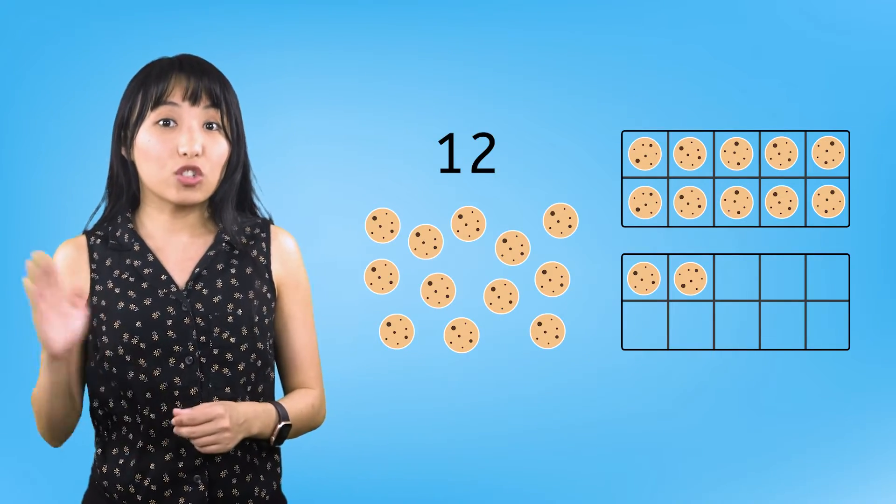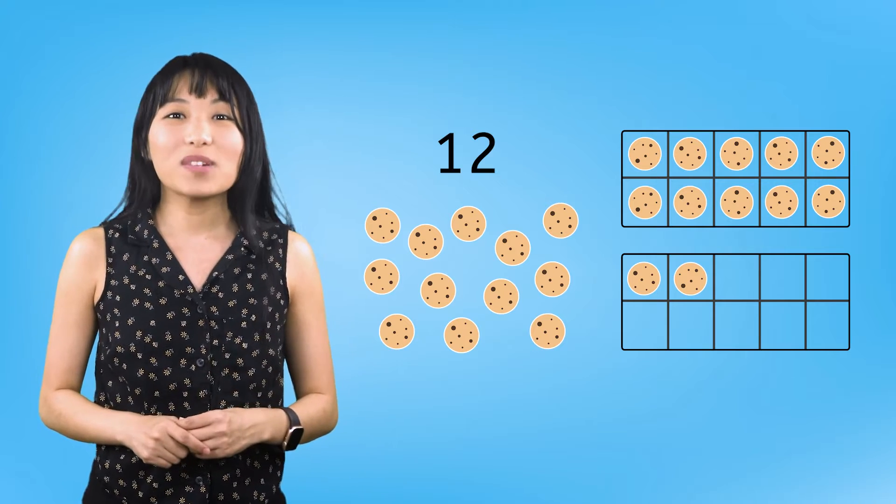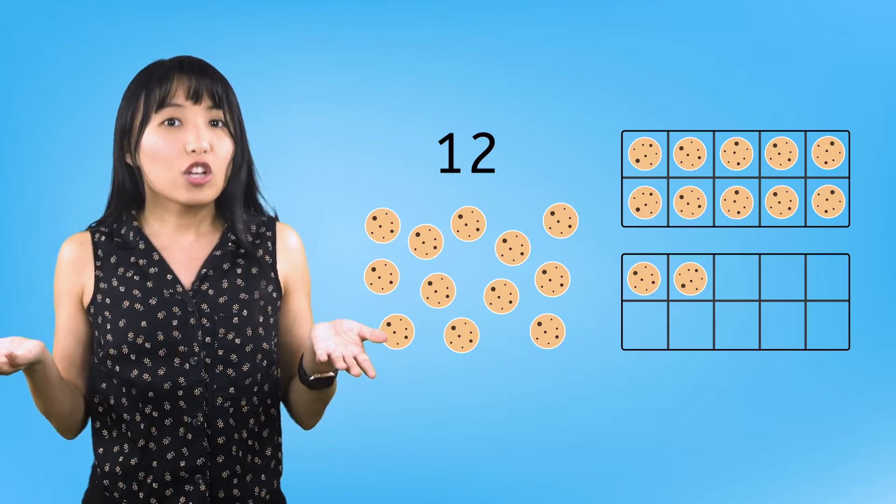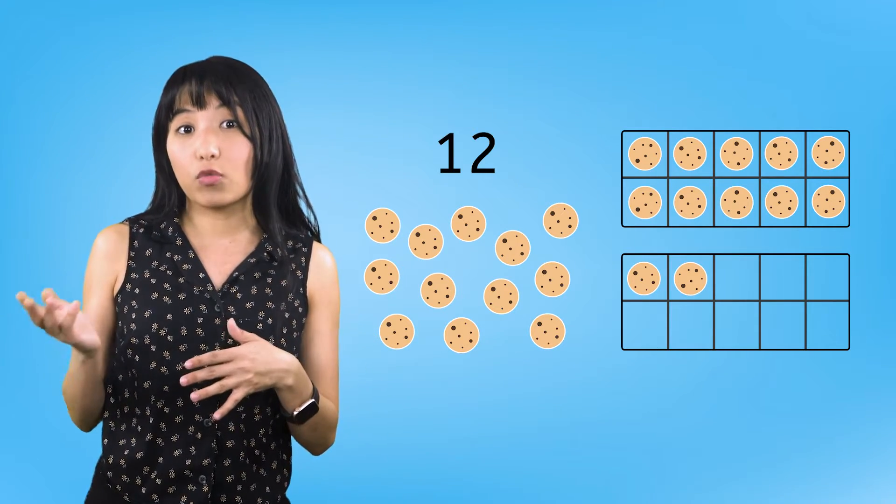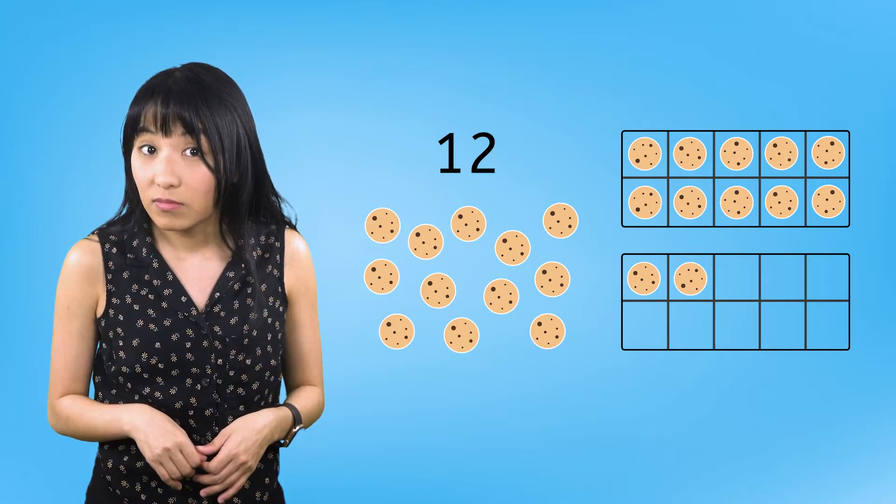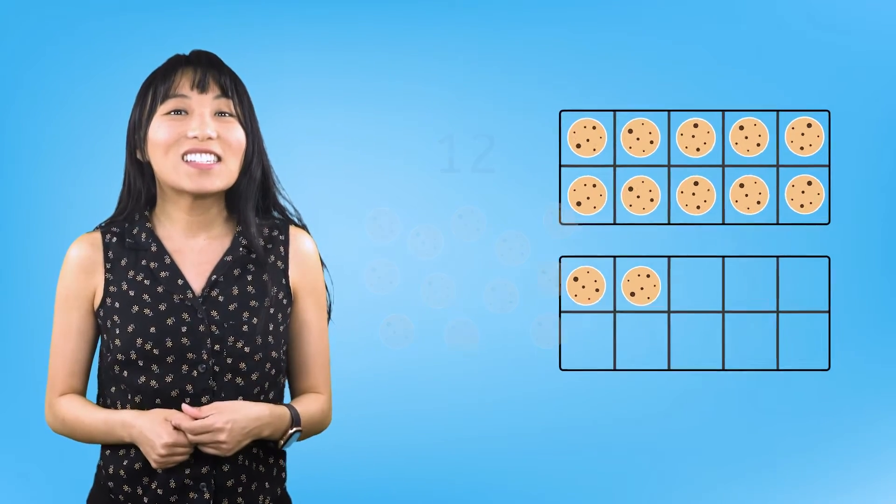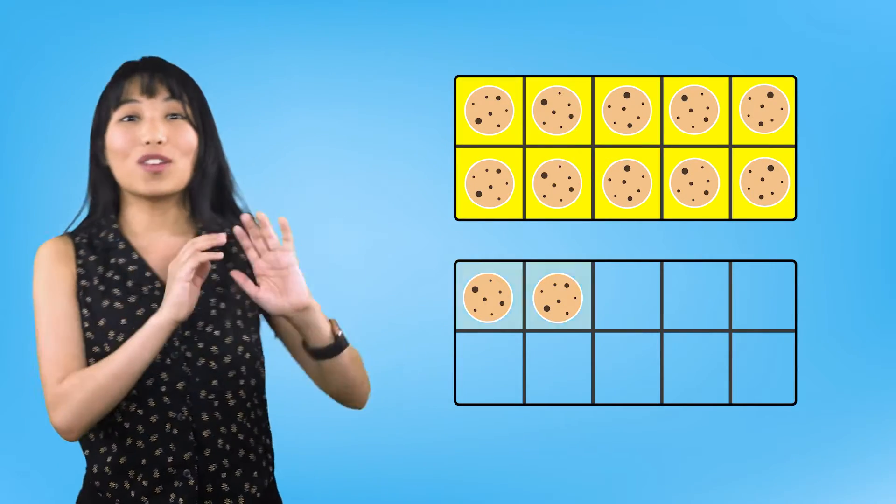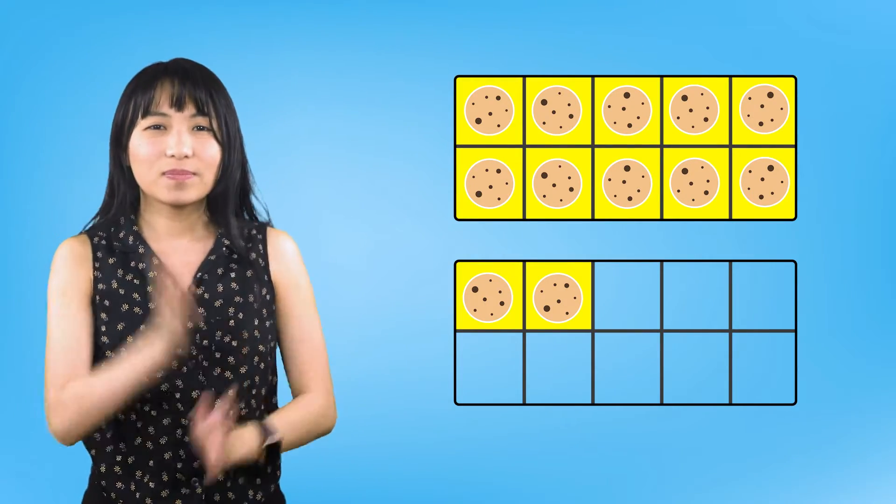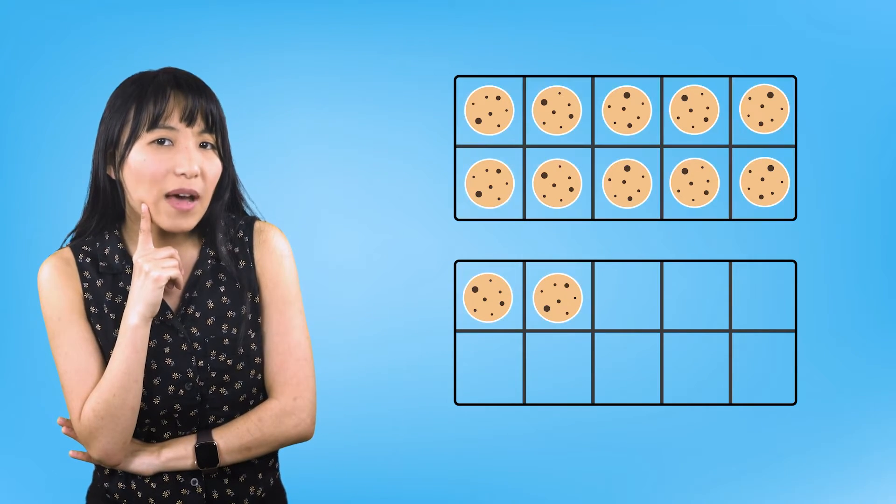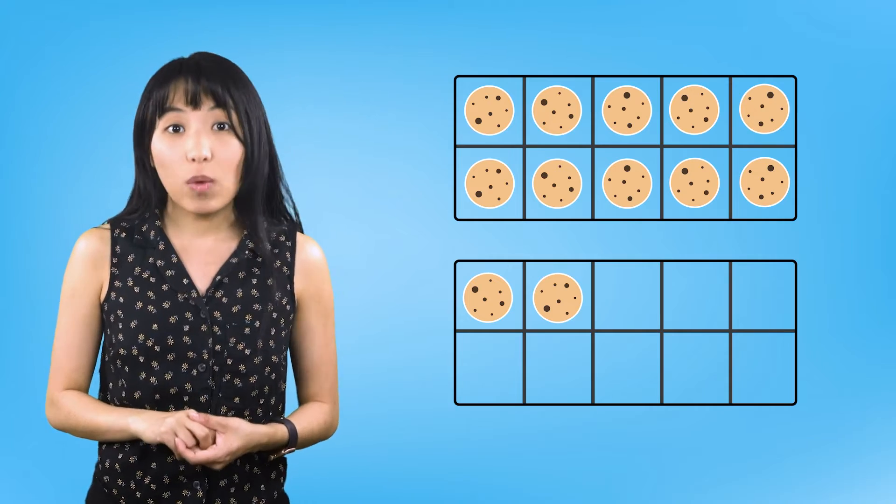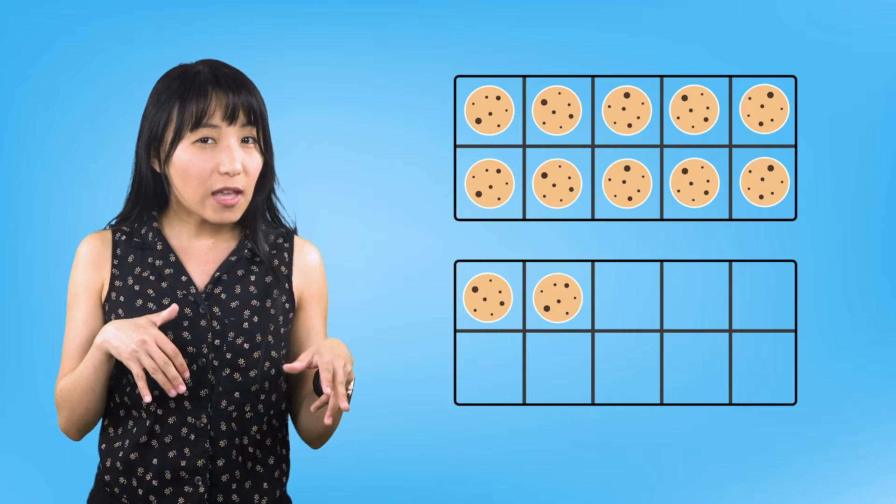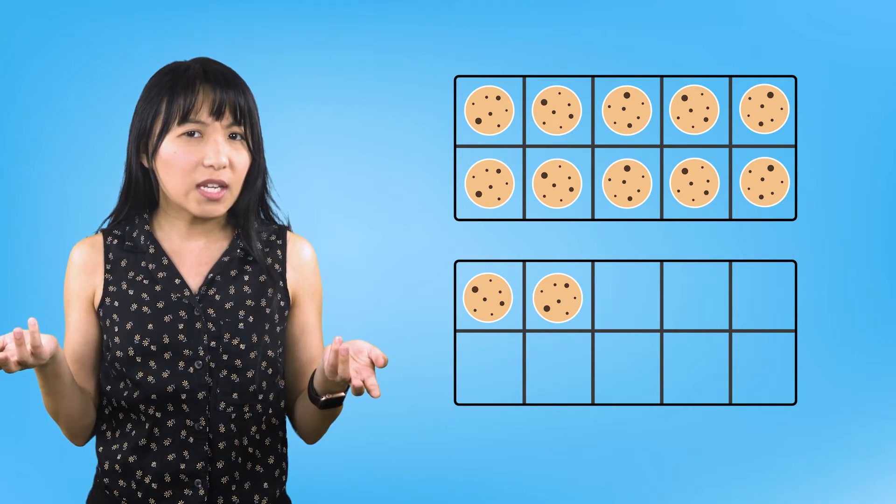So far, we have used numerals, pictures, and 10 frames to represent the number 12. Do any of these representations show how 12 can be grouped into a set of 10? Yes! The 10 frames organize 12 into one group of 10 with two left over. Let's think about our base 10 blocks. If 12 objects fill up one 10 frame with two objects left over, how many 10 blocks will we need?